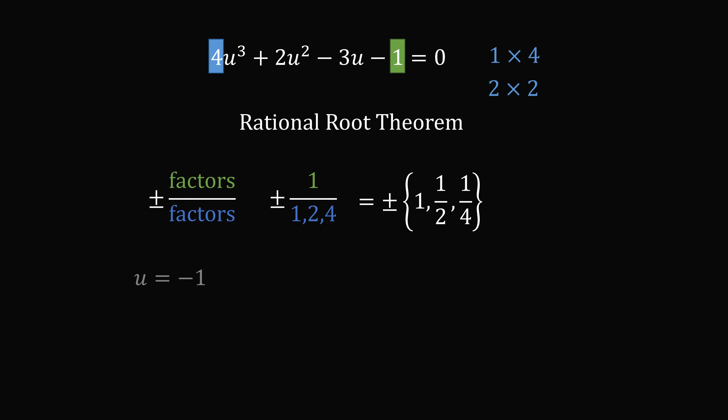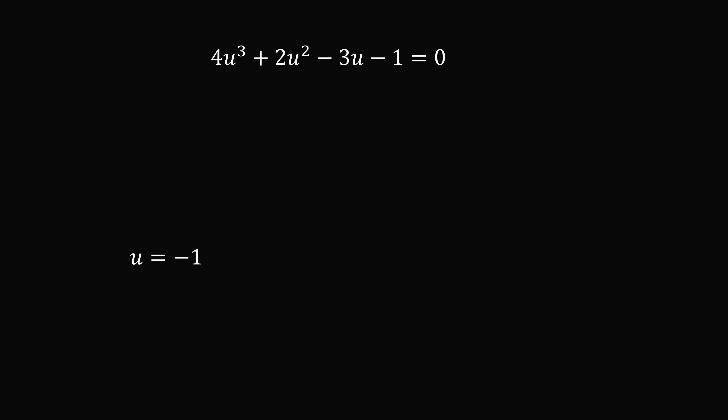Let's take a lucky guess and substitute u equals negative 1. If we do that, the equation equals 0, meaning u equals negative 1 is a root of the cubic equation. If you substitute the other candidates, they are not roots. So we've found one root. Since u equals negative 1 is a root, we know that u plus 1 is a factor, and we can divide the cubic by u plus 1 to get a resulting quadratic equation.